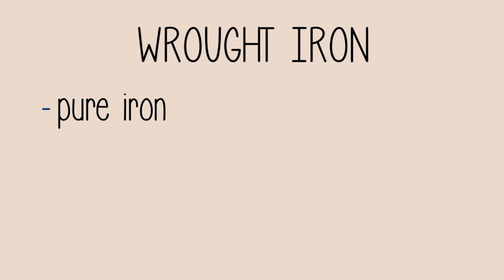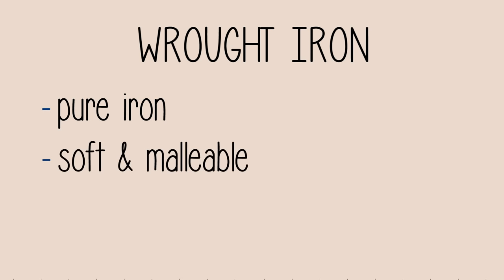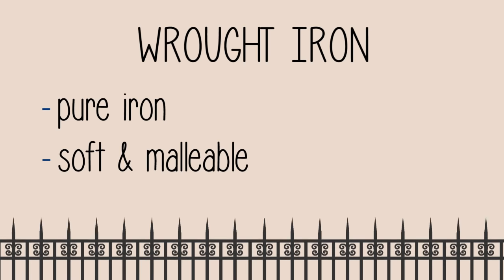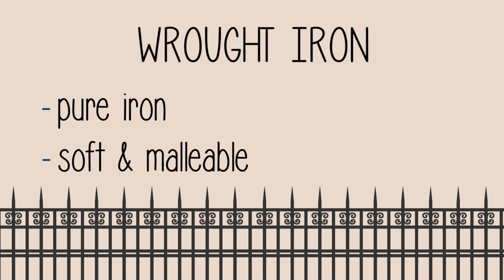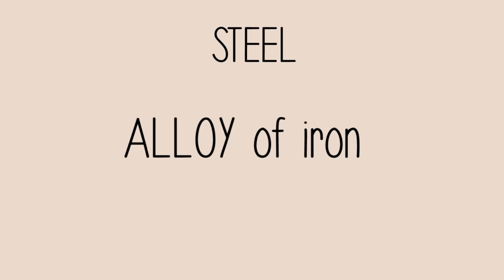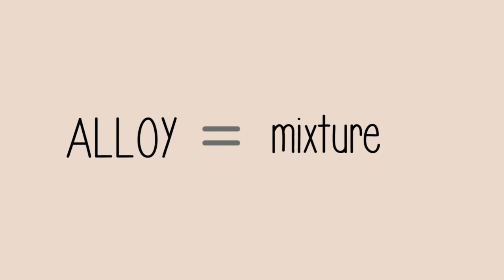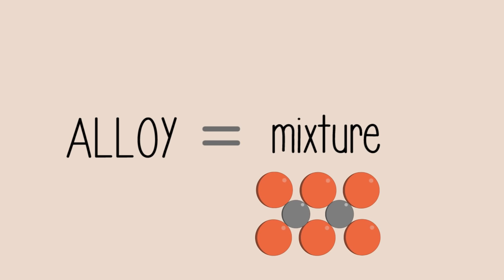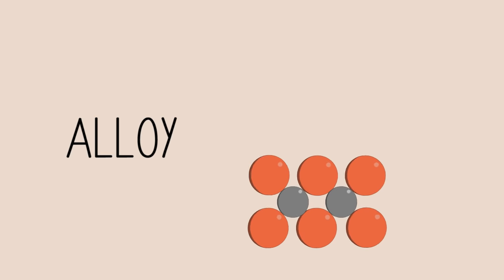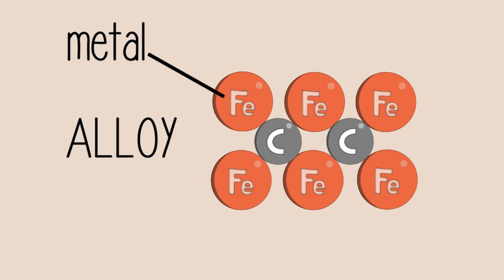Wrought iron is as close to pure iron as we can get. Wrought iron is very soft and malleable, and was once molded into fences. Since it is soft and malleable, it does not have as many real-life applications as steel, which is an alloy of iron. An alloy is a mixture of two or more elements, with at least one of the elements being a metal.